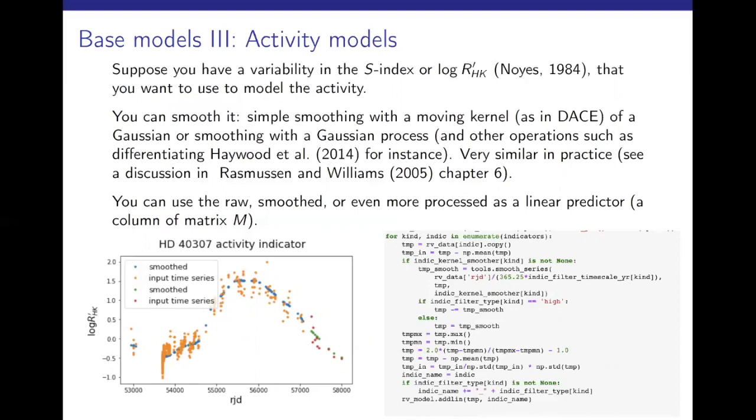And also activity models. As you may have seen in the DACE tutorial number three, you can smooth the activity indicators, in particular DSMDEX, but also FWHM, Bsector. And in DACE, it is done with a moving kernel. If you want to do it yourself with a Gaussian process, like in Hayward 2014, for example, that's up to you. In general, except if you are doing something fancy, like deriving your Gaussian process, using a kernel smoothing or a Gaussian process will give similar results. Here, it is an example of HD 4307. In orange, you have the row log r'hk of the HARPS data. And in blue, you have the smooth version of the log r'hk. And this is this blue vector that you're going to use as a linear predictor.